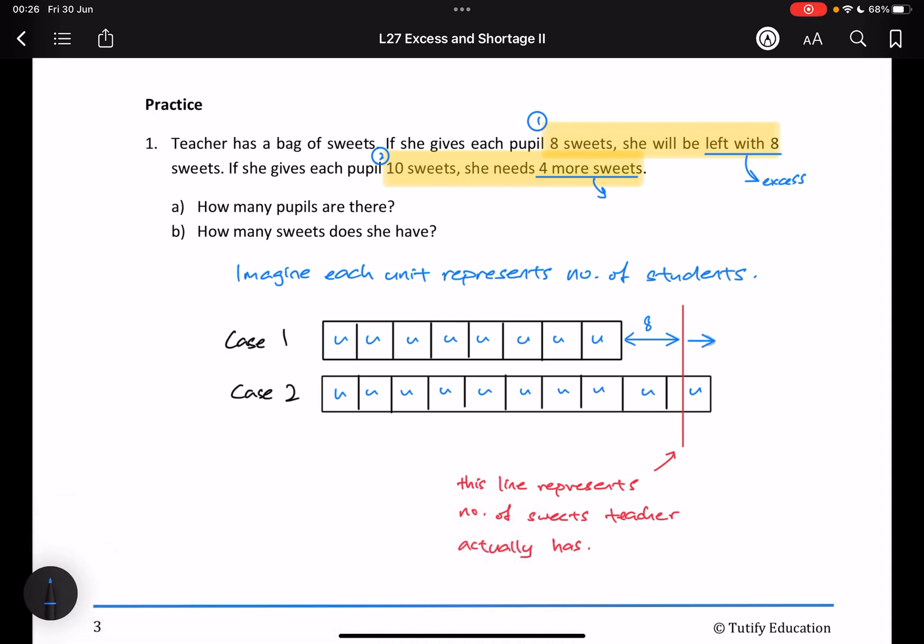So, I'm short of four. I need four more in order to achieve my goal of giving ten sweets to each student, right?